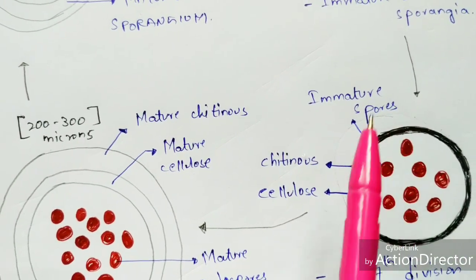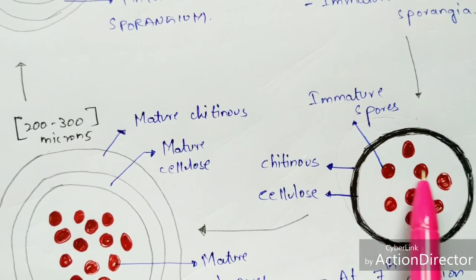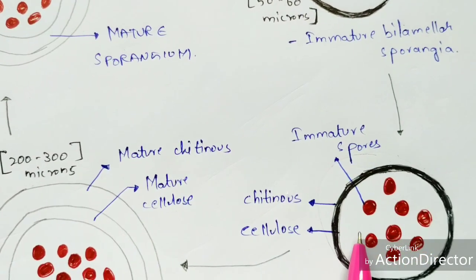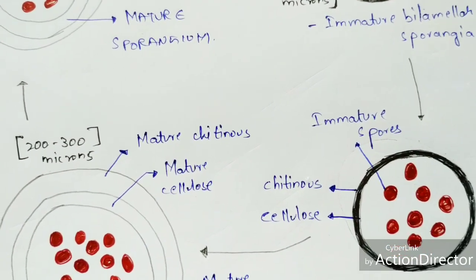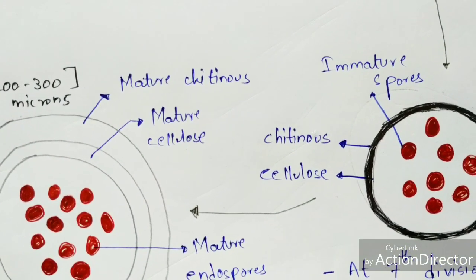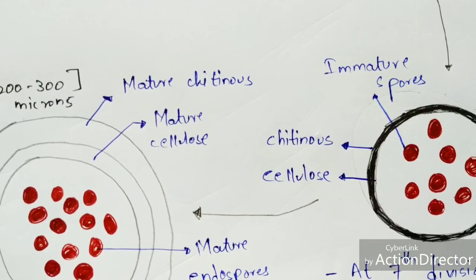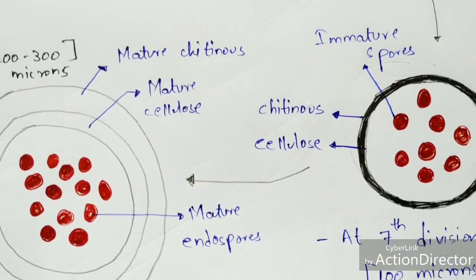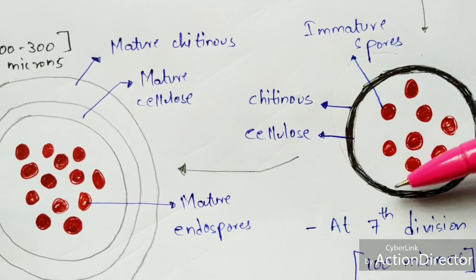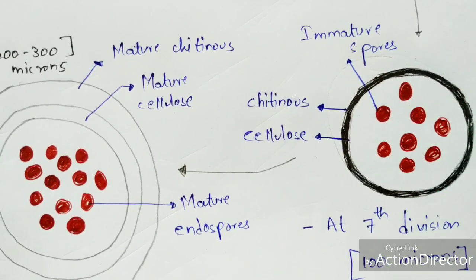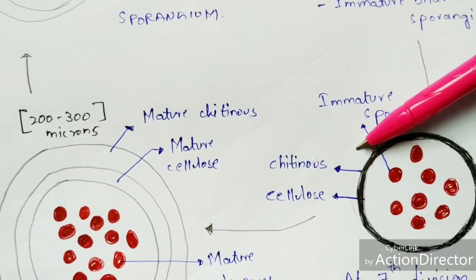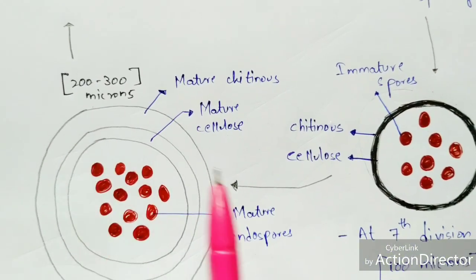The cell wall becomes bilamellar — the outer layer is chitinous and the inner layer is composed of cellulose. At the seventh mitotic division, the size reaches up to 100 microns. Both of these stages — the spores and the cell walls — are still immature at this point.